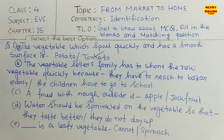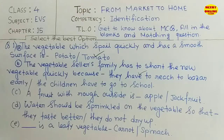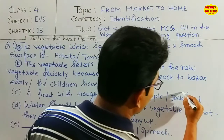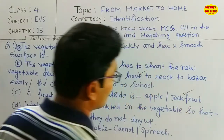Then: a fruit with a rough outside. Rough outside means the outside surface is rough. So the correct answer is that fruit — it is not smooth.